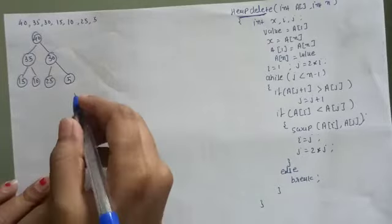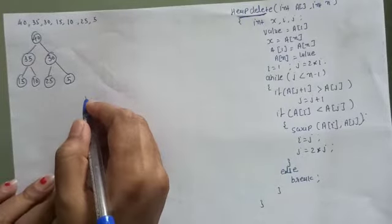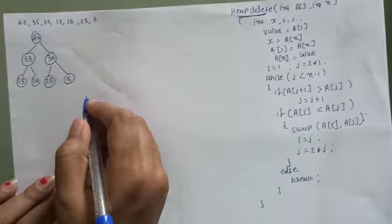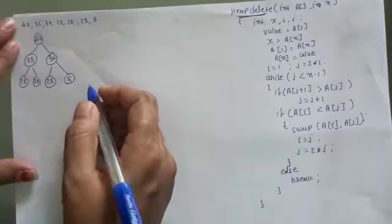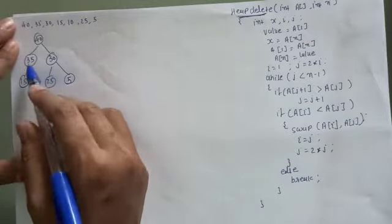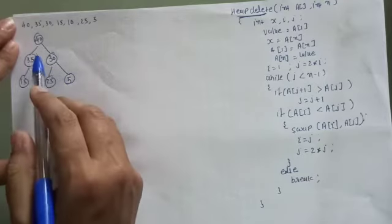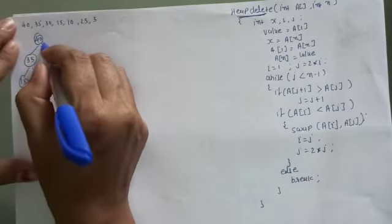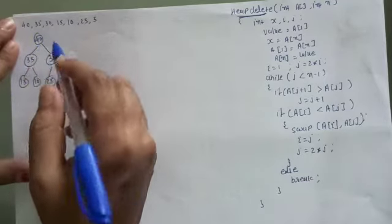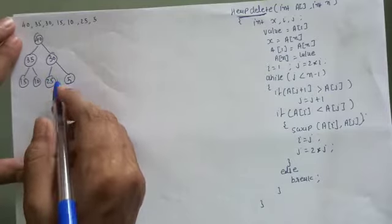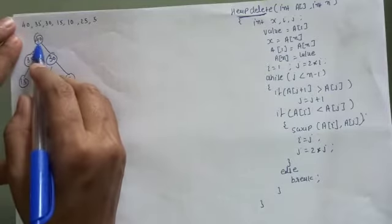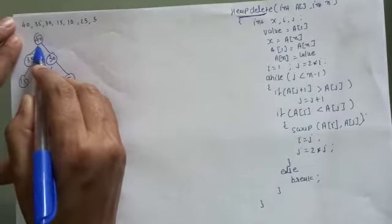In this video we will discuss deletion from a heap tree. In a heap tree you cannot delete any random node — only the root node can be deleted. Here, the root node 40 is deleted first.